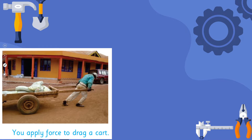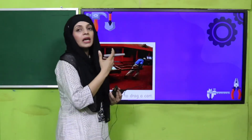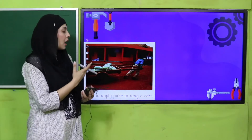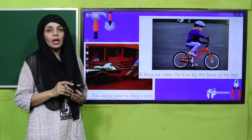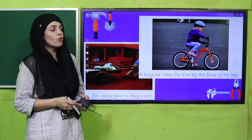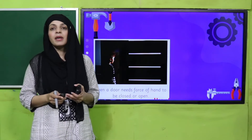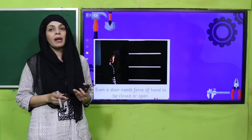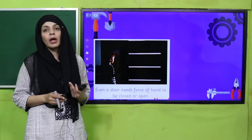Force can start movement, stop movement, or change the direction of movement. You can see that by pulling — he is pulling the cart and making it move. The boy is also pushing on the pedals of the bicycle, and this is why the cycle is moving. Whenever you apply a push or pull, it results in movement, and that push and pull is your force.